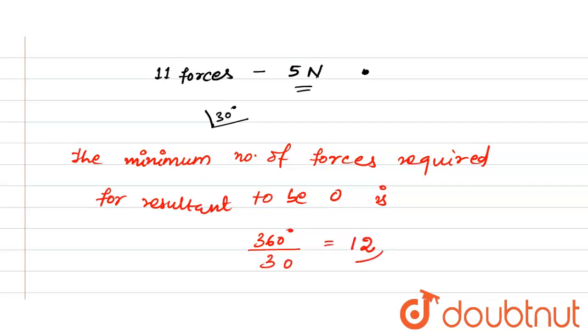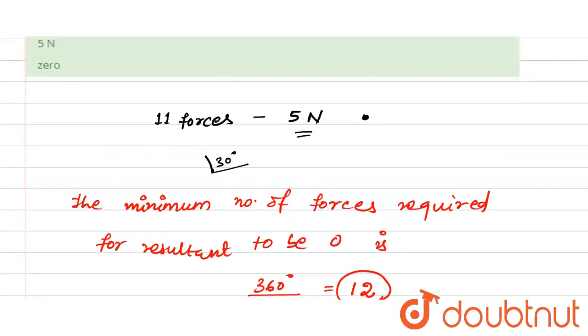So minimum 12 forces are needed for the resultant to be 0. But there are only 11 forces as per the question, so the resultant forces is: